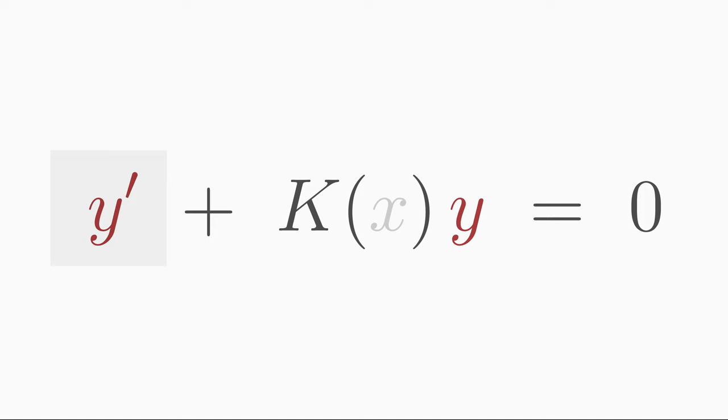Also note that before the first derivative y', the coefficient must be equal to 1. If this is not the case, then you simply have to divide the whole equation by the coefficient which is in front of y'. Then you have the right form.